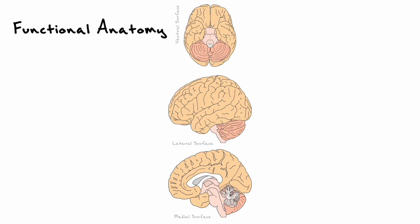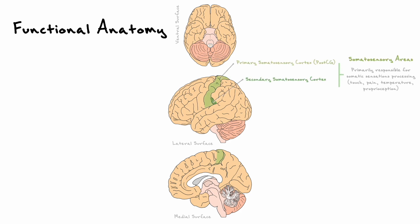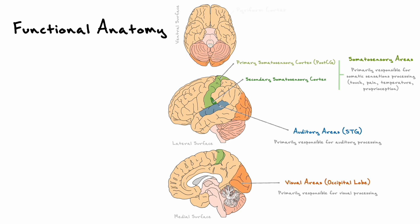Our more detailed conversation about these areas will come in their respective context. The first type of cortical areas that the brain has are sensory areas. These areas include the somatosensory areas, the auditory areas, the visual areas, and the piriform cortex, which is the principal cortical area to process the sense of smell. For the somatosensory, auditory, and visual areas, there is an important principle by which the brain processes sensory information.